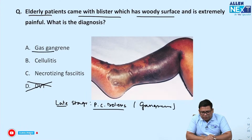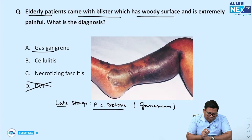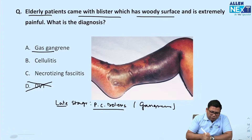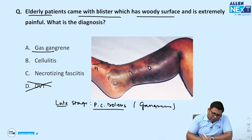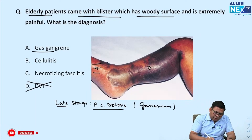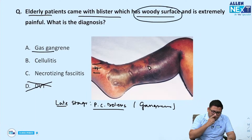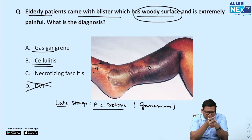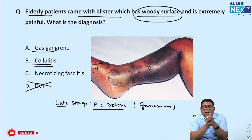When talking about gangrene, there will be a line of demarcation. It would not be healthy part here and dead part there — the most distal part would also be dead. The woody presentation is very important — it is classically seen in both cellulitis and necrotizing fasciitis, but in necrotizing fasciitis there is boggy swelling as well.